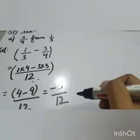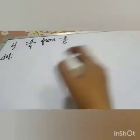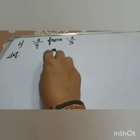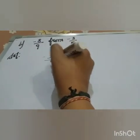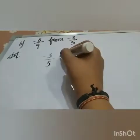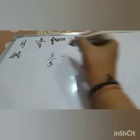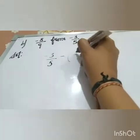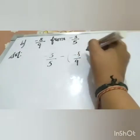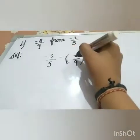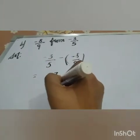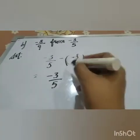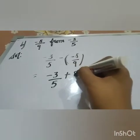By this way you have to solve this. Now here is part b: minus 8 by 9 from minus 3 by 5. So I will write minus 3 by 5 minus, here is minus 8 by 9.